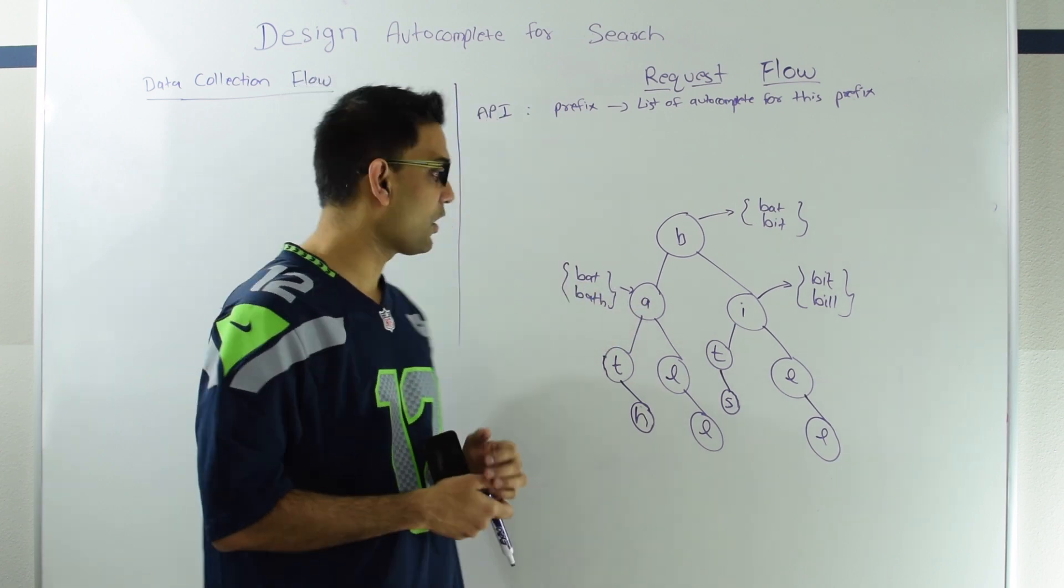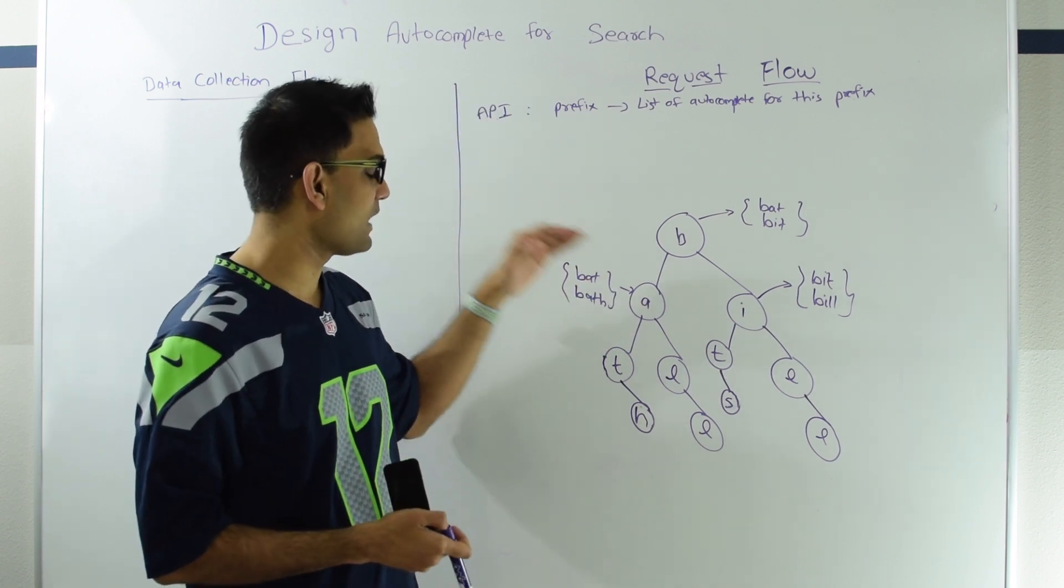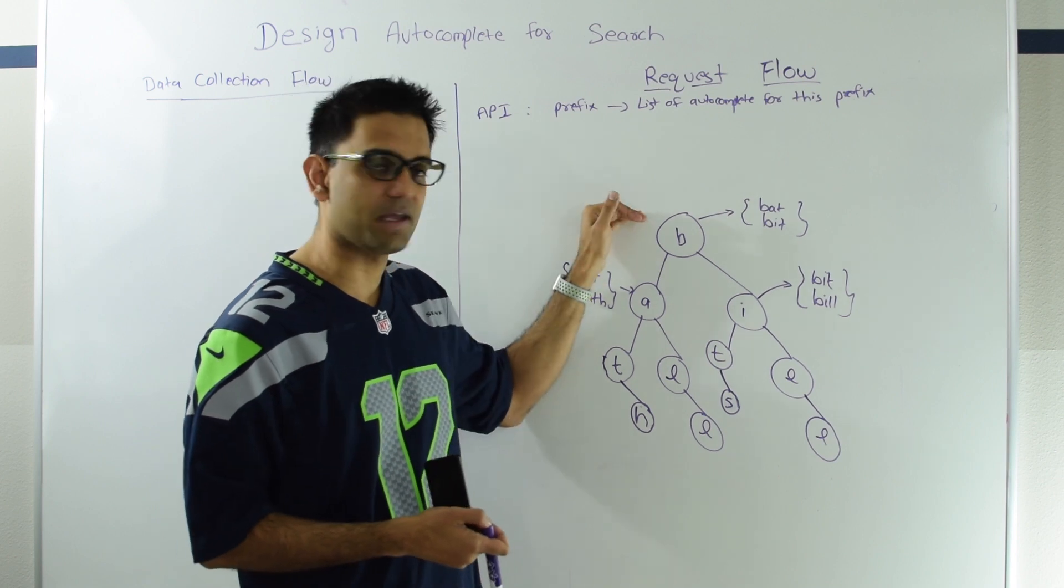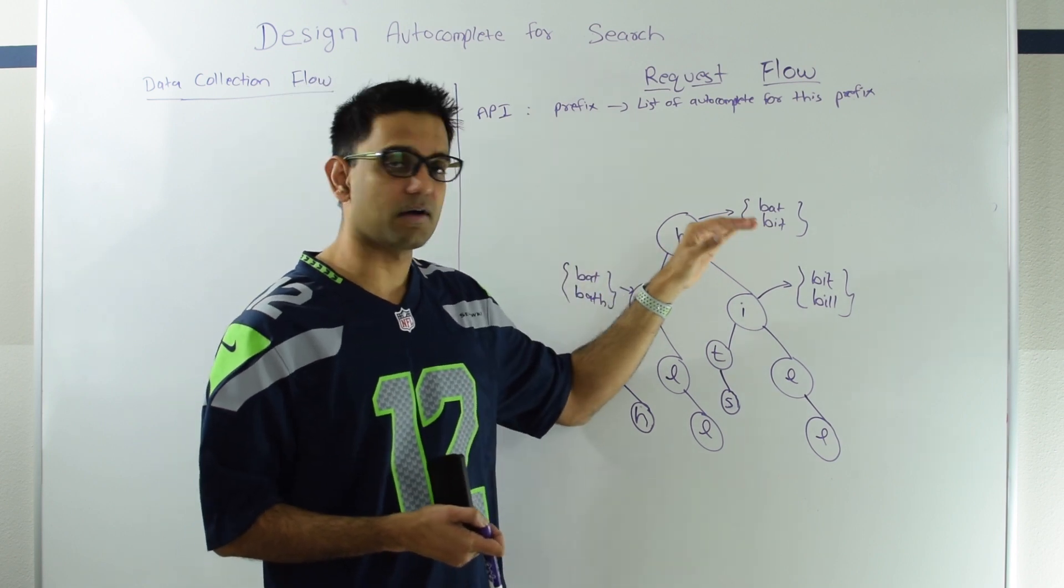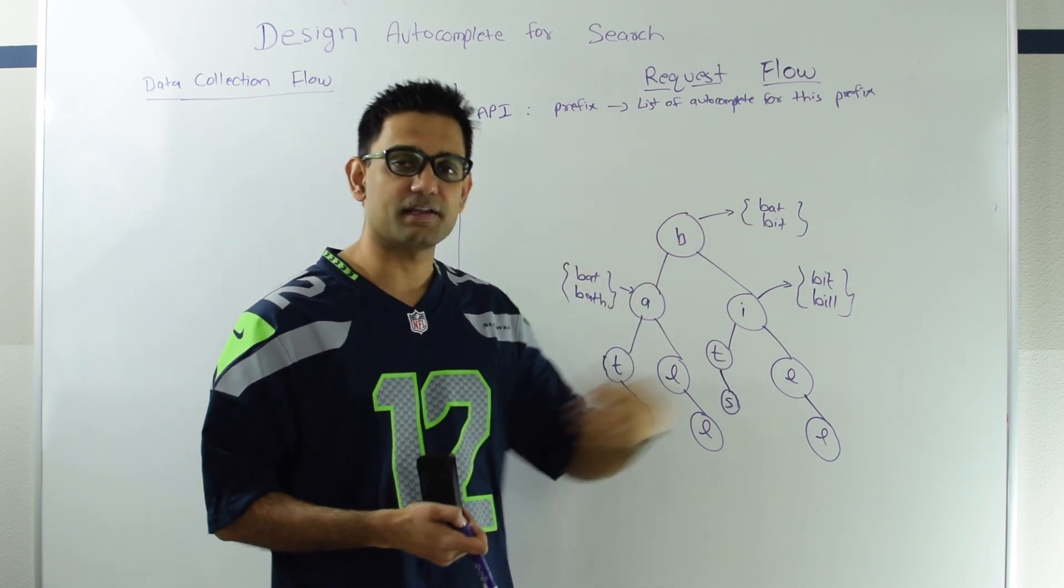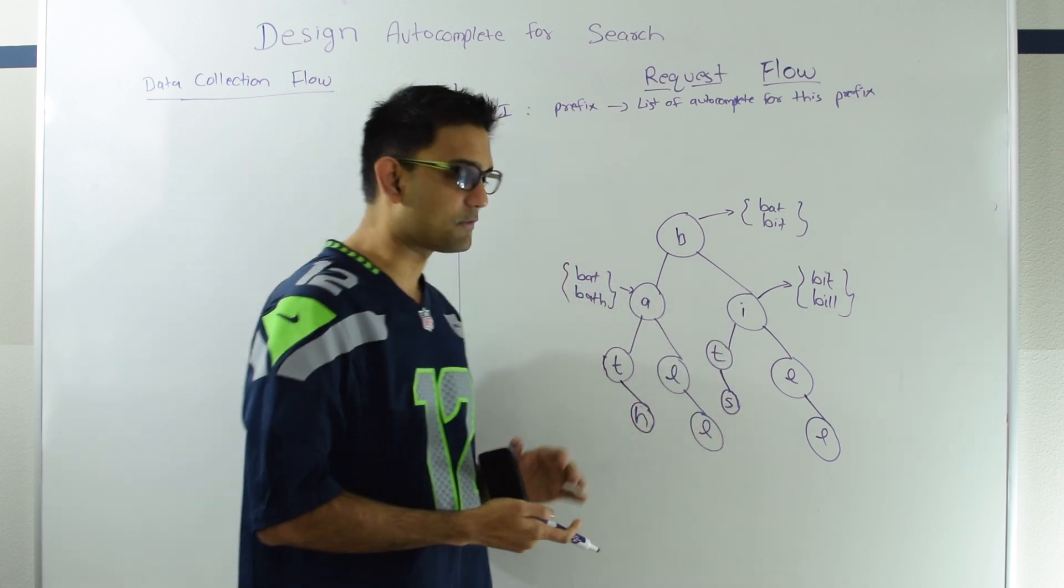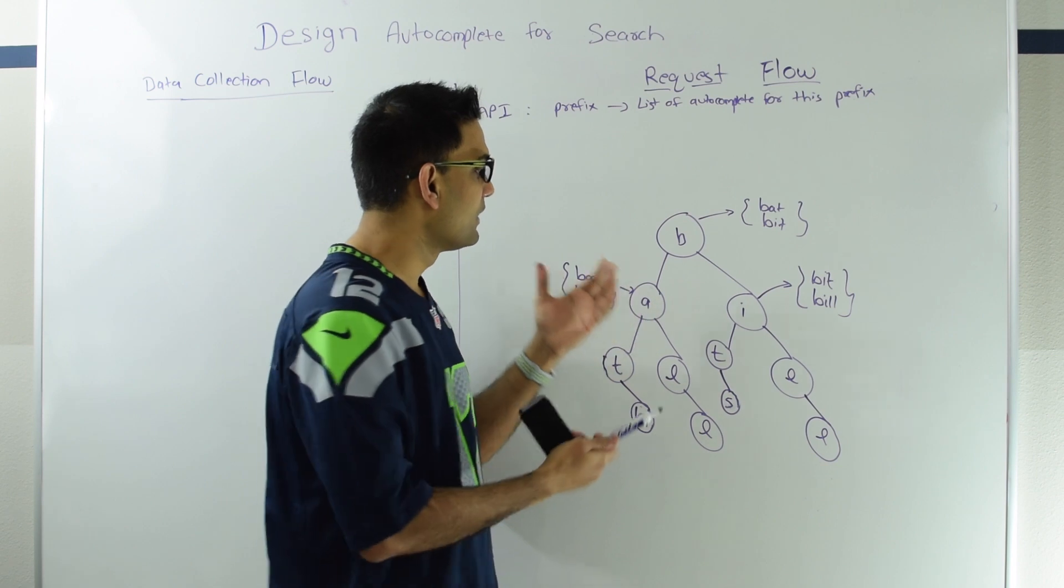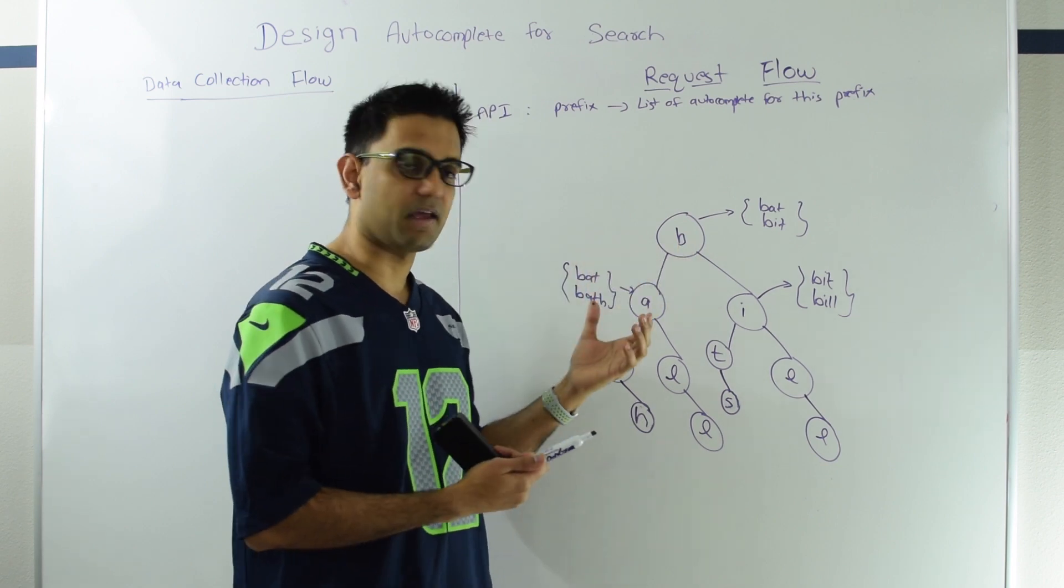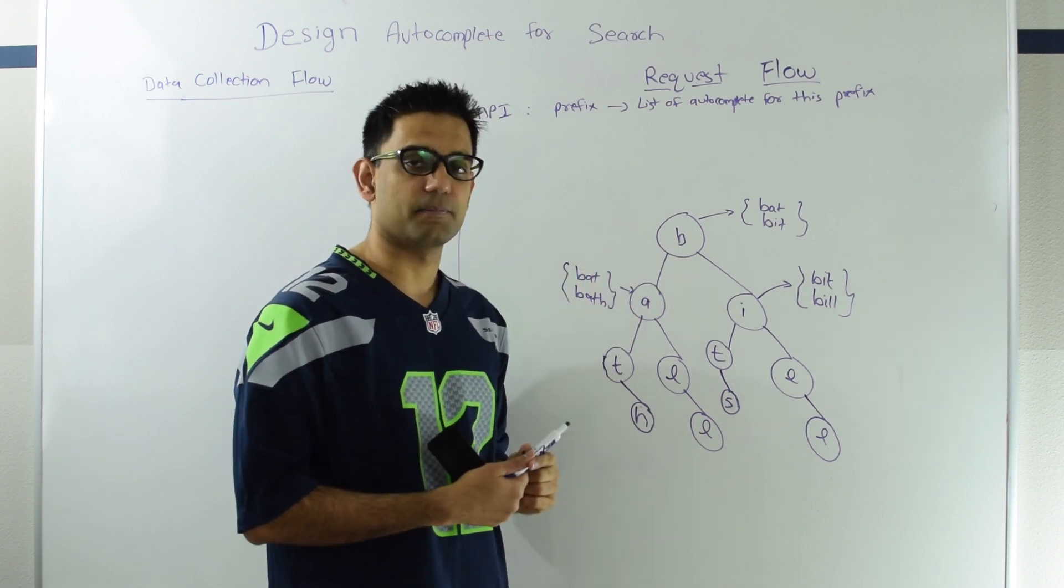Why are we storing this format? Because when the request comes in and the prefix is just b, I can quickly look it up here, bat and bit, and instantly return that back instead of looking into my entire subtree to see which are the top k terms for the prefix b.